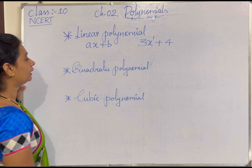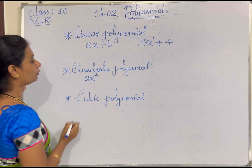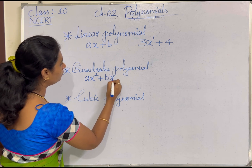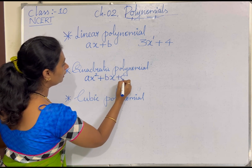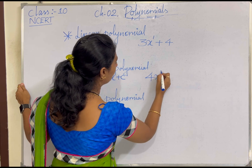The second type is the quadratic polynomial. The general form of a quadratic polynomial is ax² + bx + c. For example, 4x² - 3x + 9. Here the highest power of the variable is 2. If any polynomial expression has degree 2, it comes under quadratic polynomial.